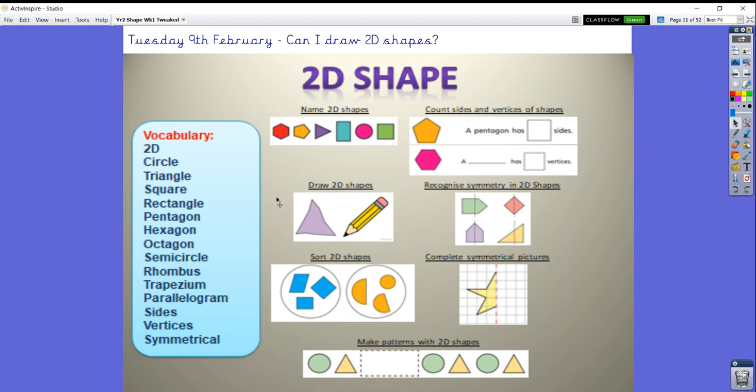So far this week you have revised naming your 2D shapes and counting how many sides and vertices they have. You've also been drawing your 2D shapes. That's what we're going to focus on today. Then we'll think about sorting them, look at symmetry and recognizing and drawing it, and finish the week making patterns using 2D shapes.